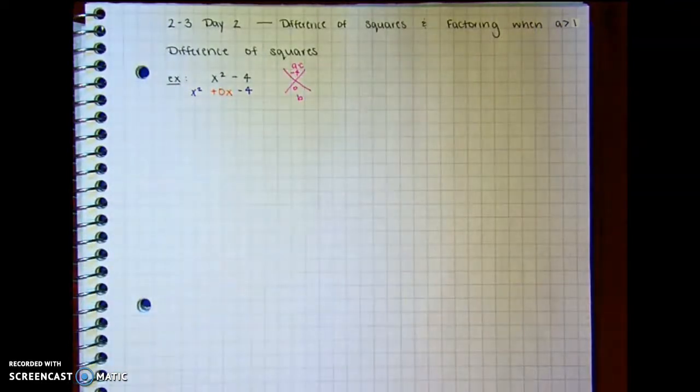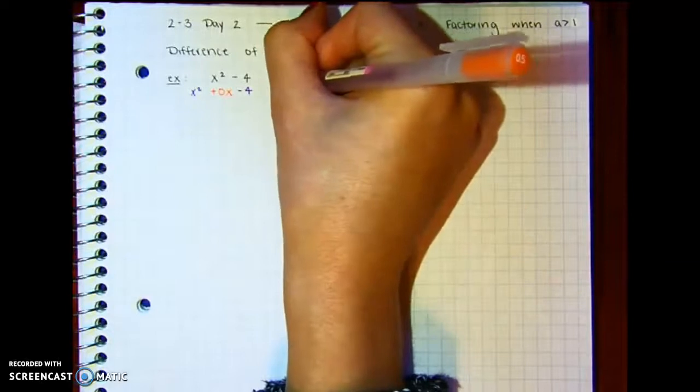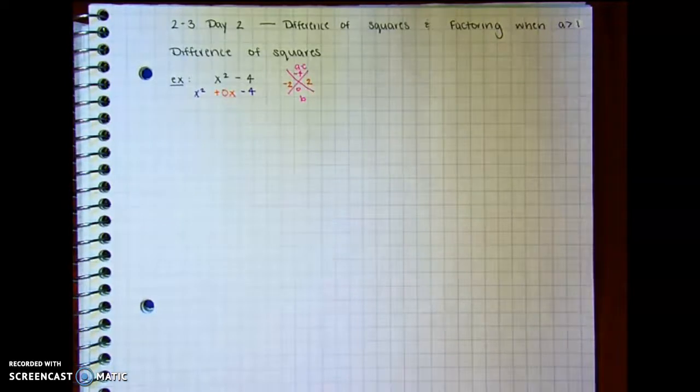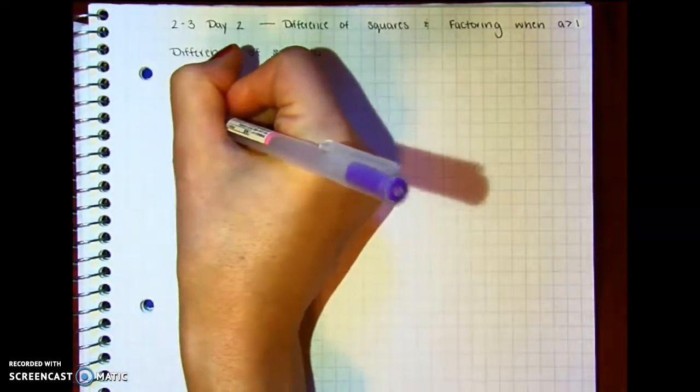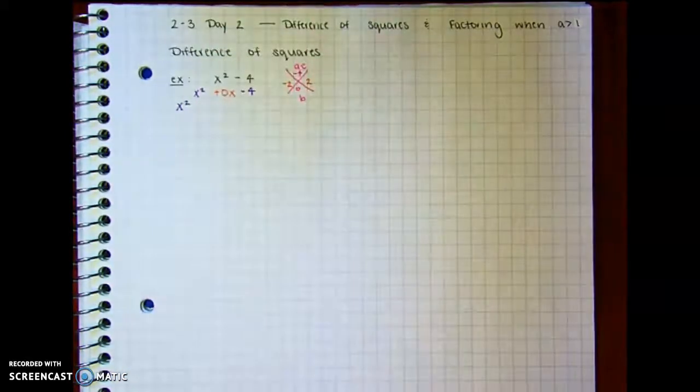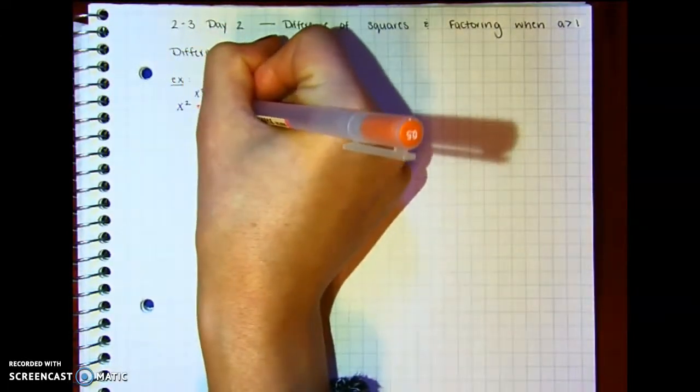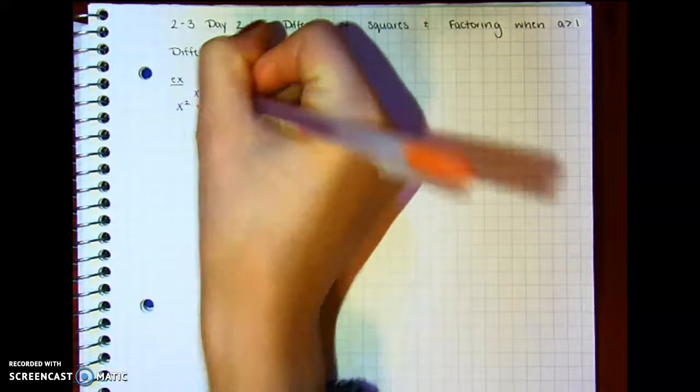So what multiplies to be negative 4 and adds to be 0? So that's going to be negative 2 and positive 2. So then, remember I can replace this 0 with a plus 2x and a minus 2x, because these are equivalent.